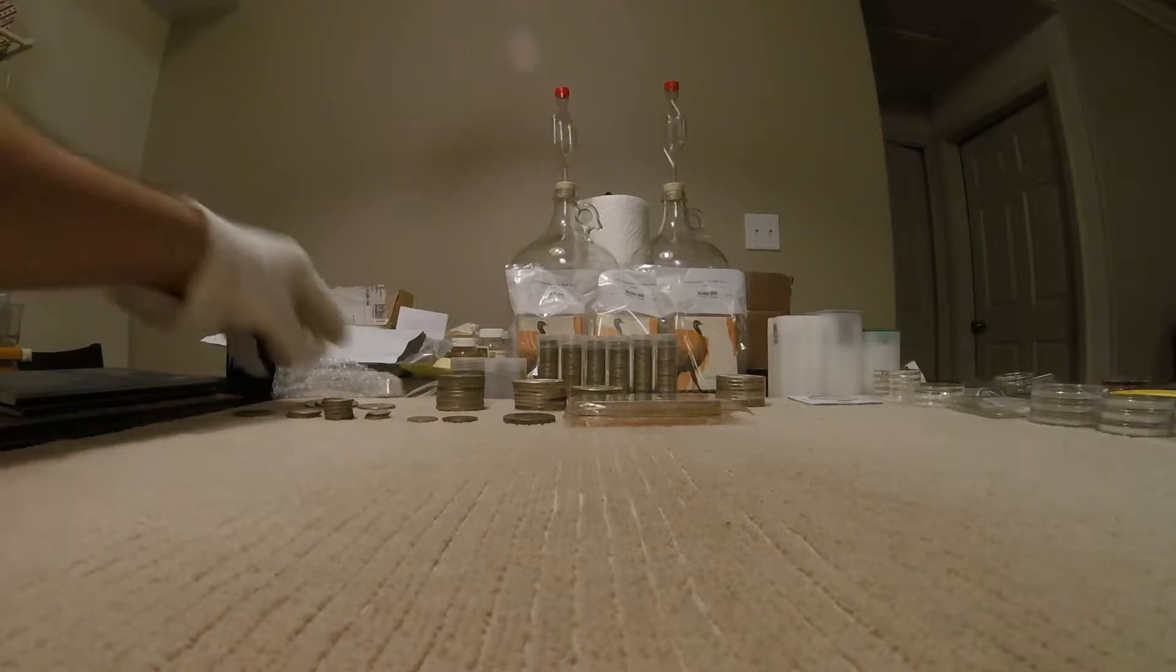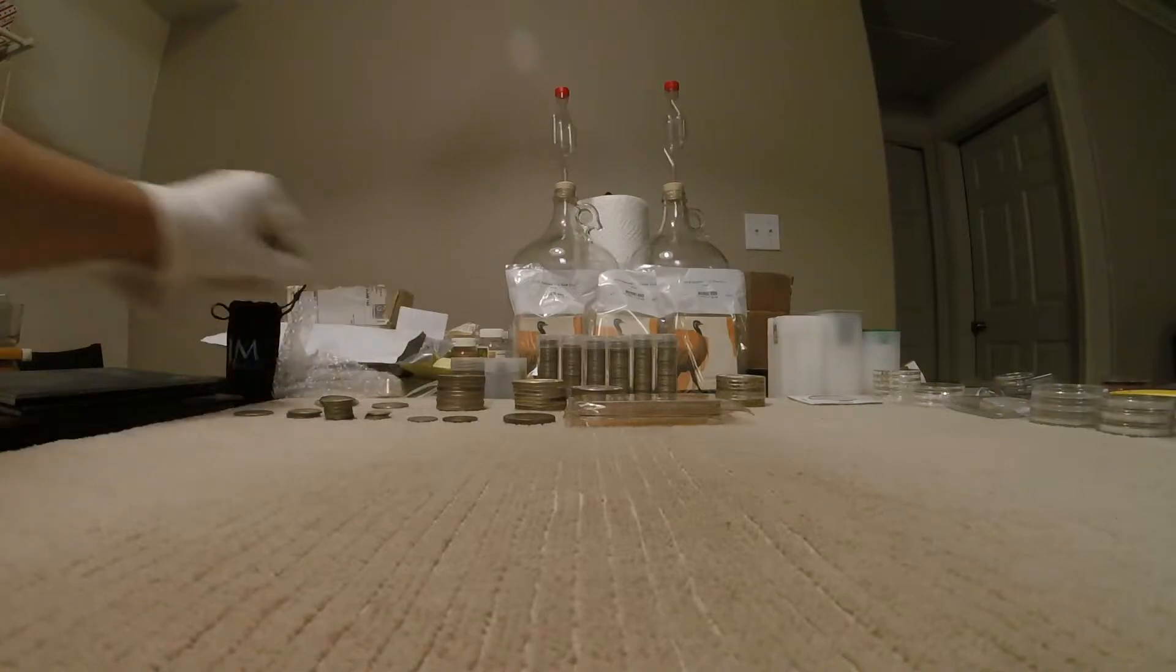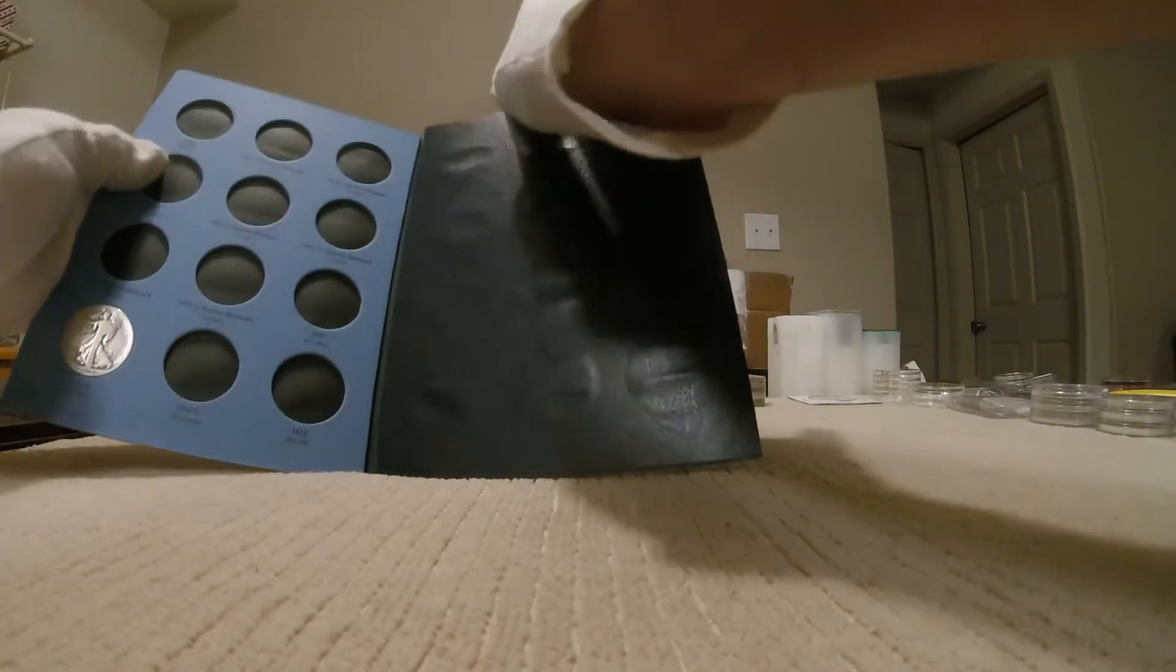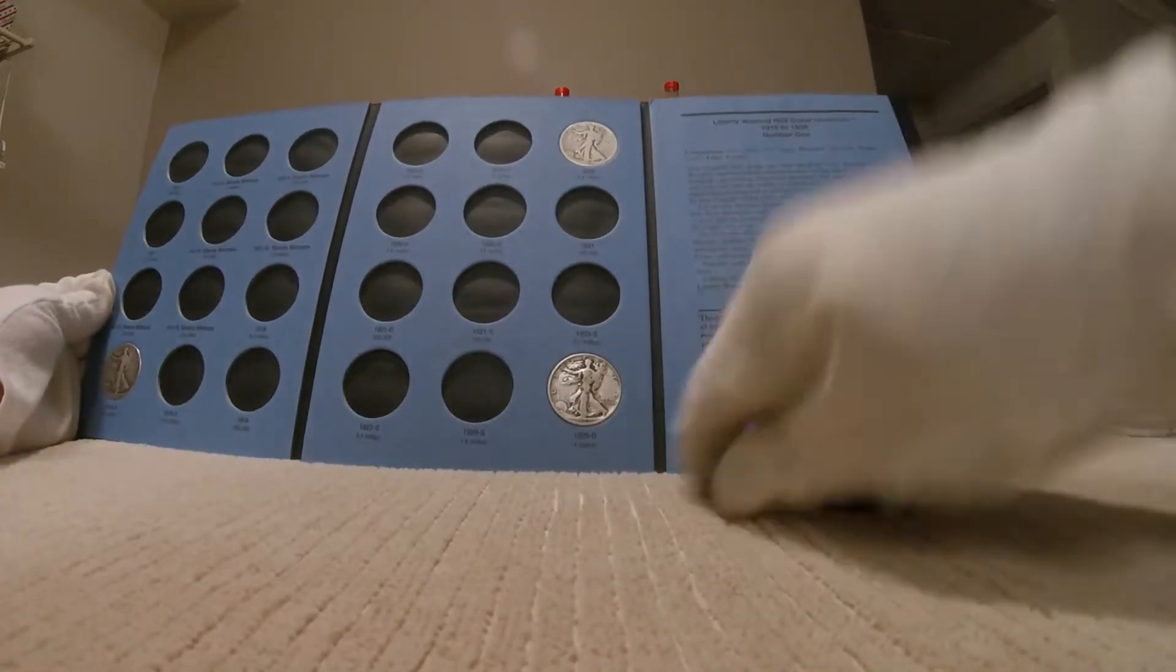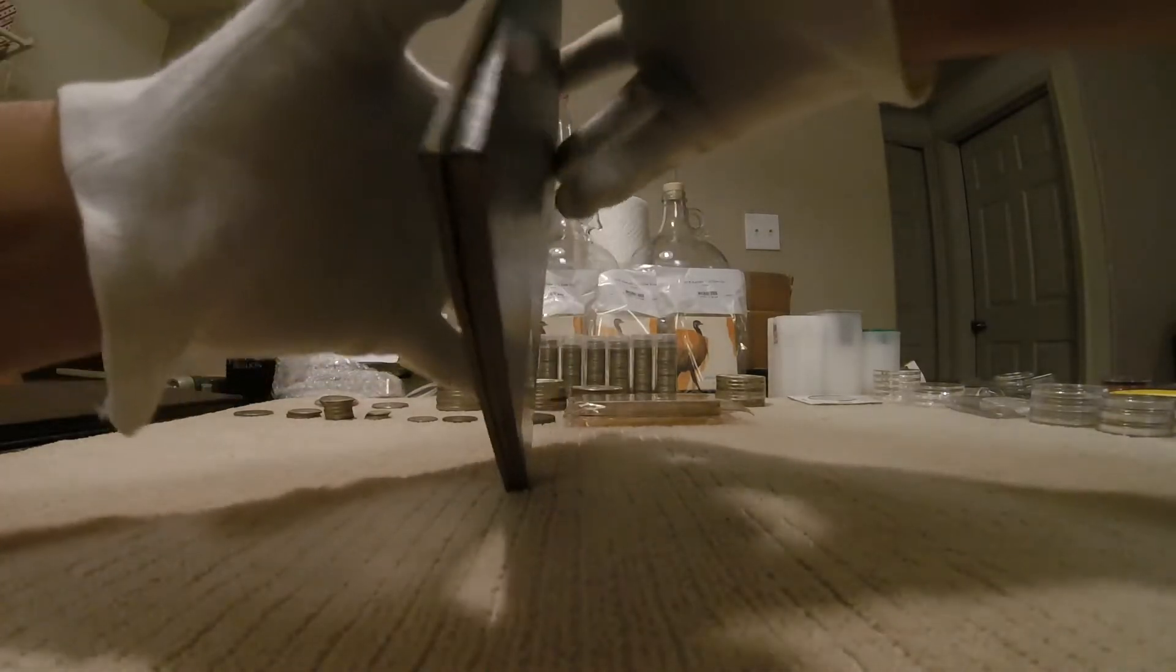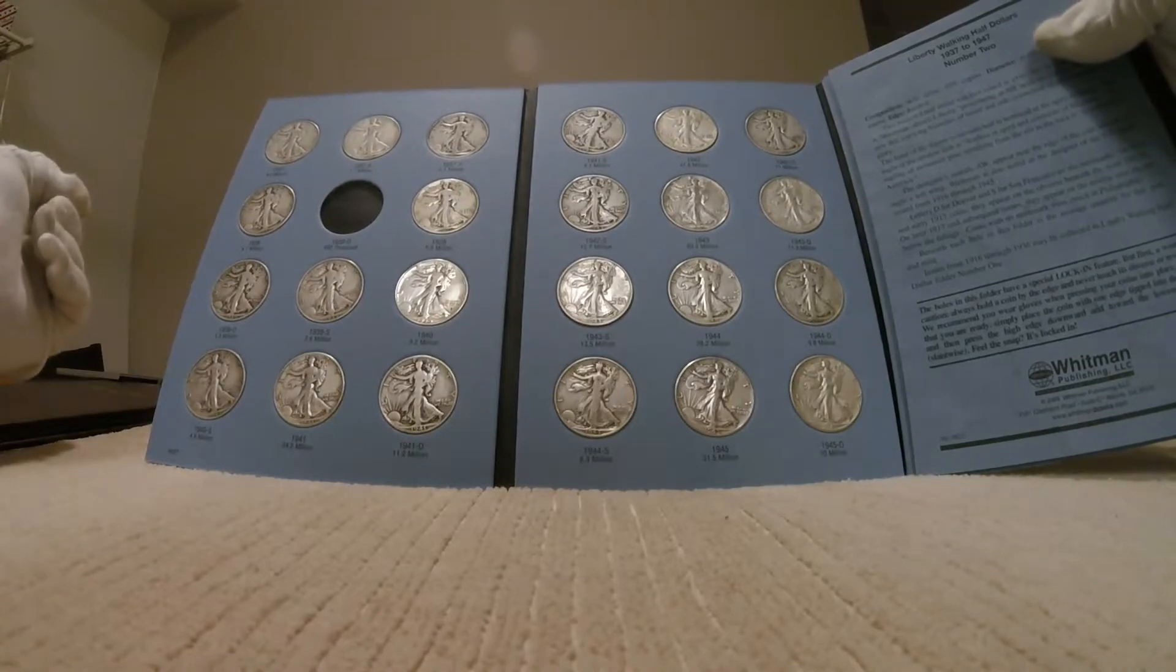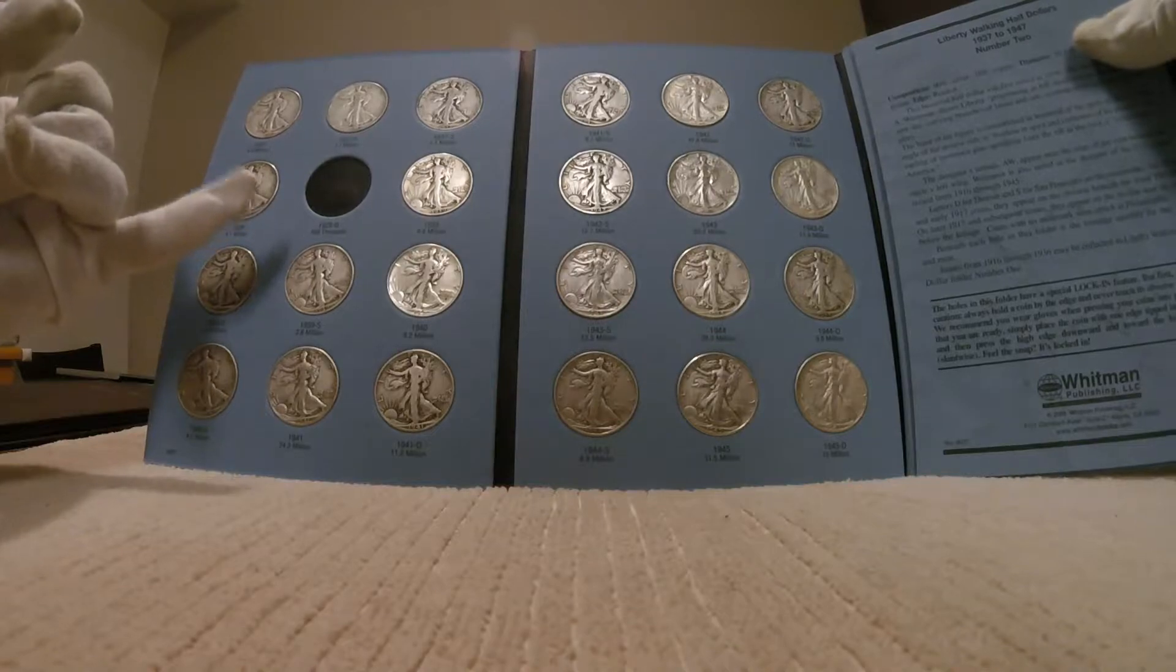Now the Walking Liberties, I started putting in these Whitman folders. And so, this is the early years, so obviously they don't have that many. 1929D had a one million mintage. And moving on to the second folder.